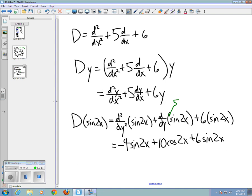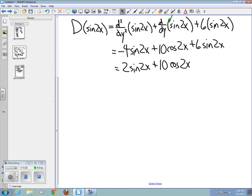And, of course, we can combine the sine terms. So, we end up getting 2sin(2x) + 10cos(2x). So, if we wanted to draw a picture of what happened here, what we have is we've got basically this operator that we're calling D. So, this is D. And what we just found out is that if we put sin(2x) into D, that what comes out is 2sin(2x) + 10cos(2x).